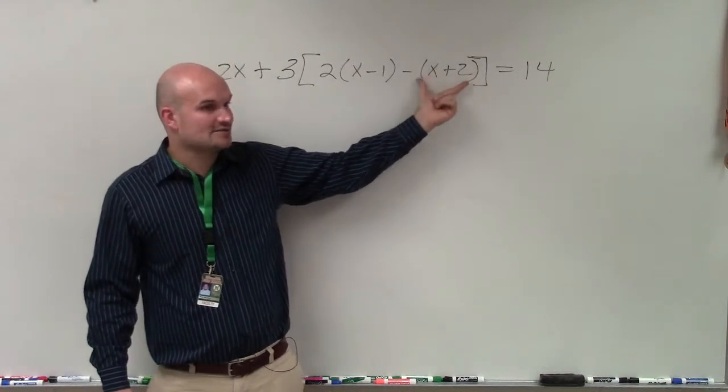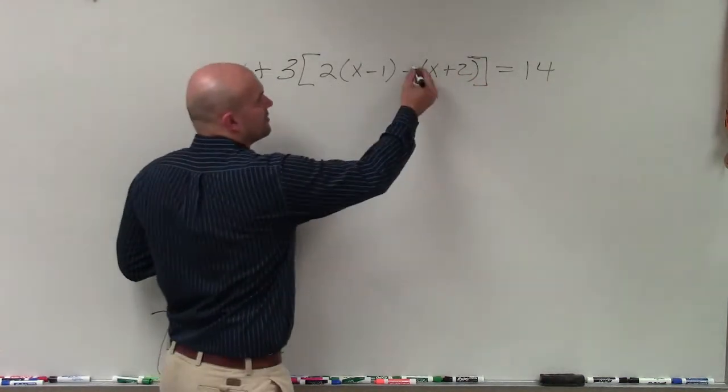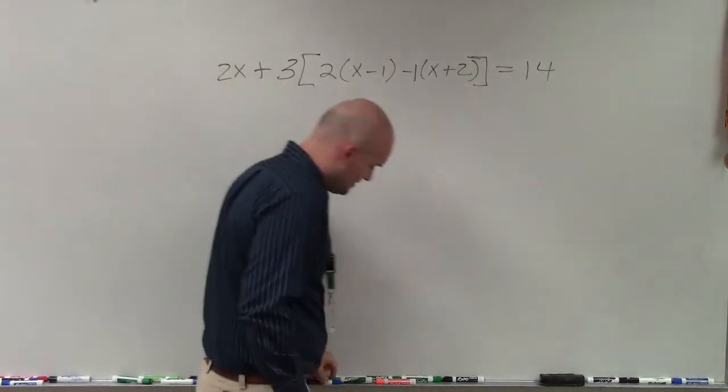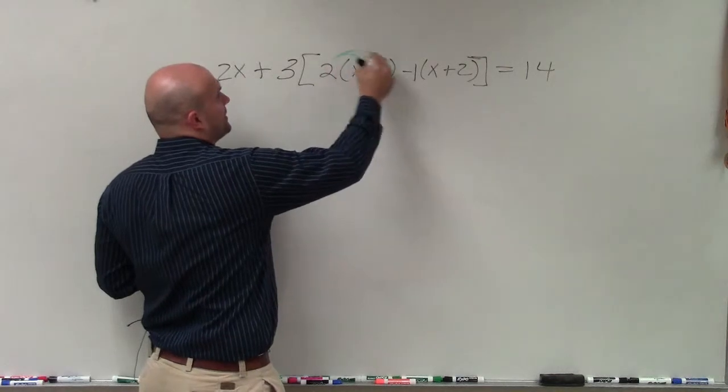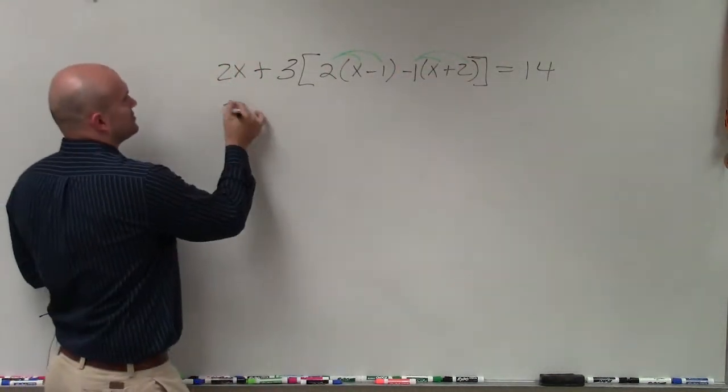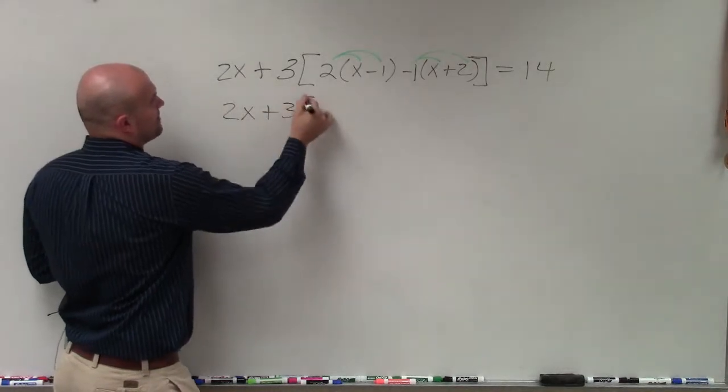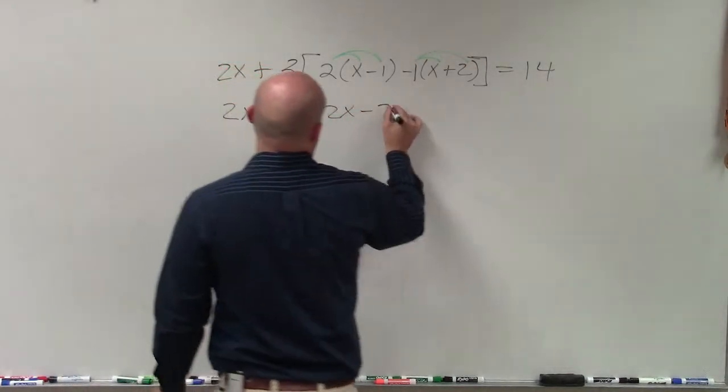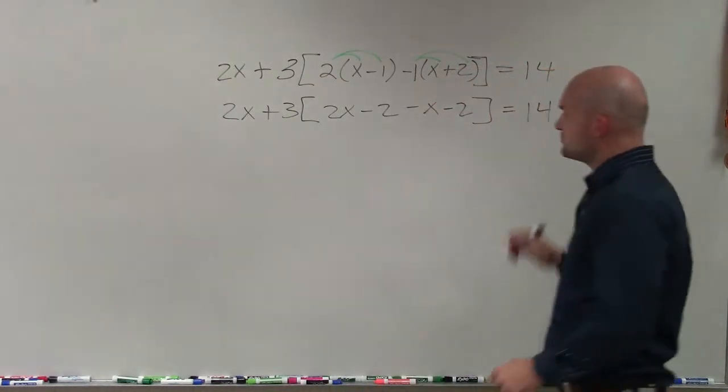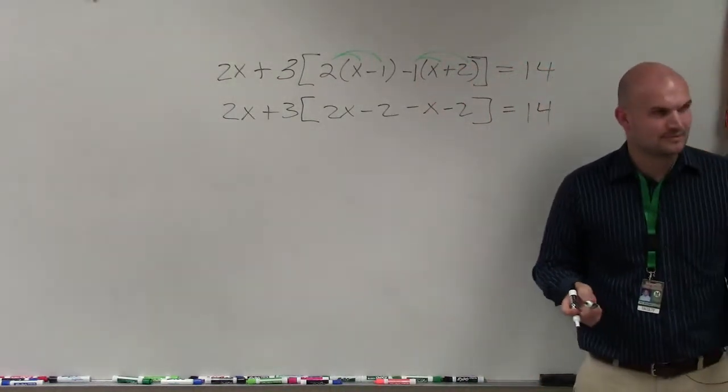So then I start looking outside of it, and I notice I have a negative 1 and a 2 being multiplied by them. So therefore, I need to apply distributive property to both of those. So I write 2x plus 3 times 2x minus 2 minus x minus 2 equals 14. Does everybody see what I did? OK.